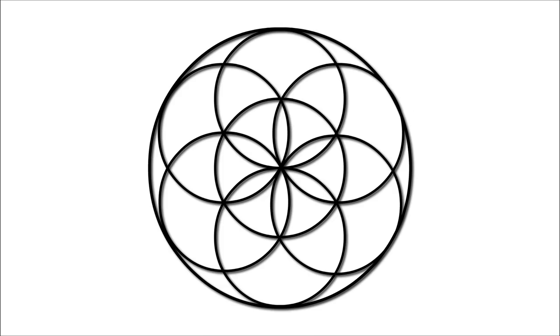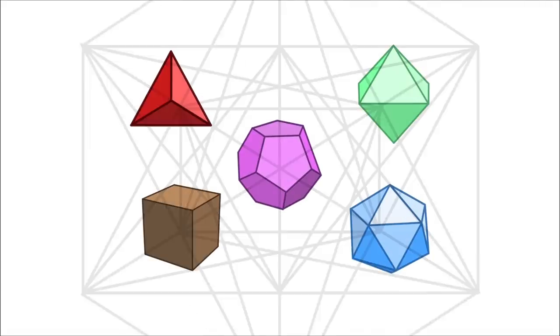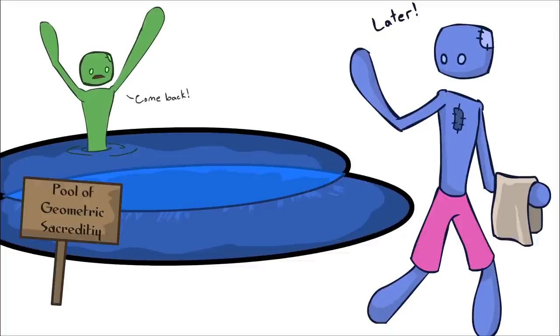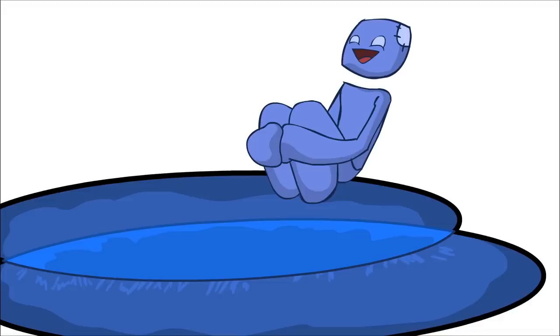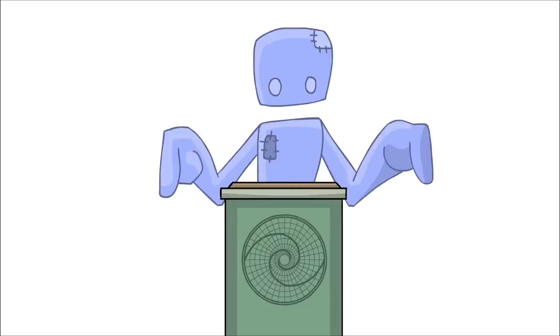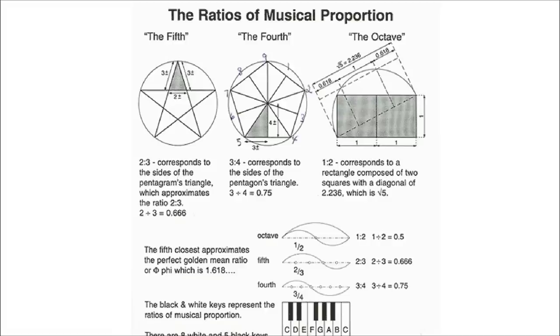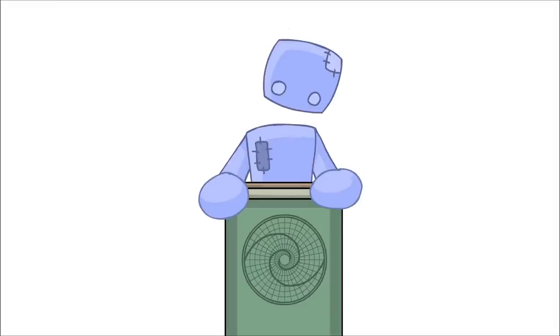We looked at the genesis pattern and how it forms the fruit of life, the pattern that all physical matter in existence comes out of. We jumped out of the sacred geometric pool for a few lessons, and today we're going to dive right back in.